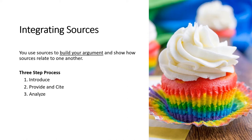First, you need to introduce the source. This is where you share who wrote or created the material. Introduction may include adding the author's name and title of the work to your writing. Next, you provide the source or part of the source along with the citation. In this step, you're usually quoting, paraphrasing, or summarizing your selected source.